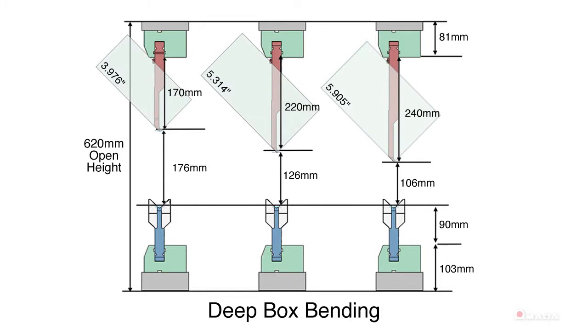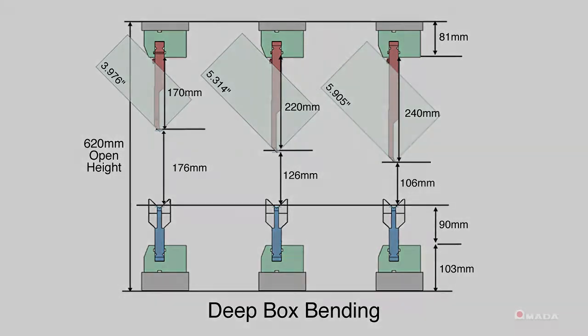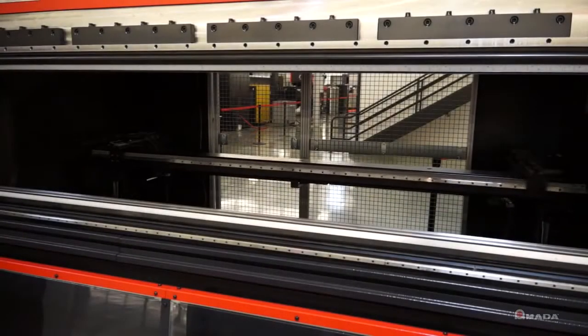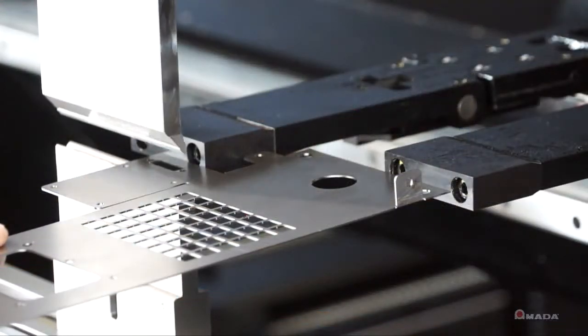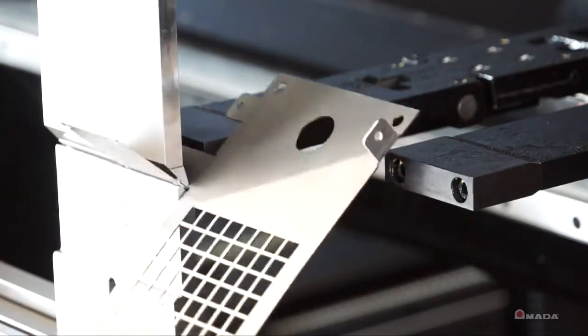It has an 8-axis high-speed back gauge with L-shift function, which allows operators to bend a wide variety of part geometries.